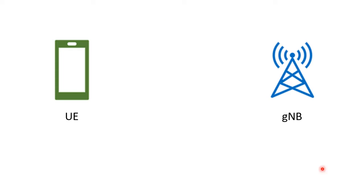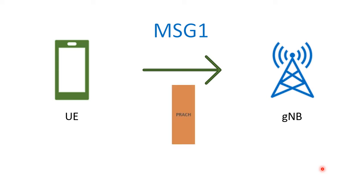After successfully reading the SIB1 information, the UE uses the PRACH resource to transmit Message 1. PRACH is a common resource, so multiple UEs can use this PRACH resource to access the gNodeB and transmit the preamble. So there can be collisions — it is a contention-based access. If the gNodeB successfully detects a preamble, it reads the preamble and then gets the RA-RNTI from the UE.